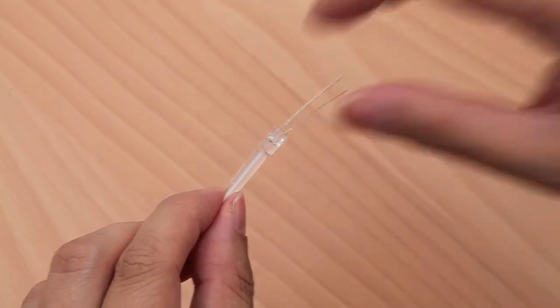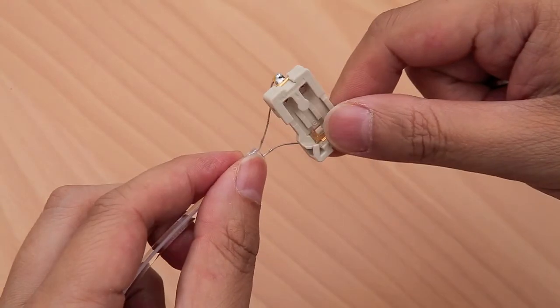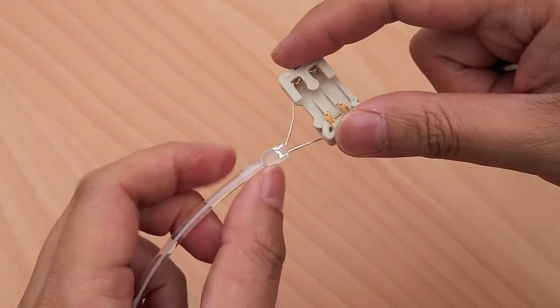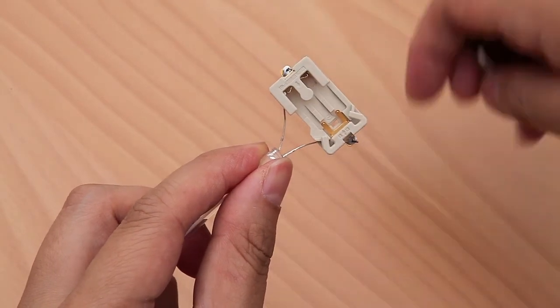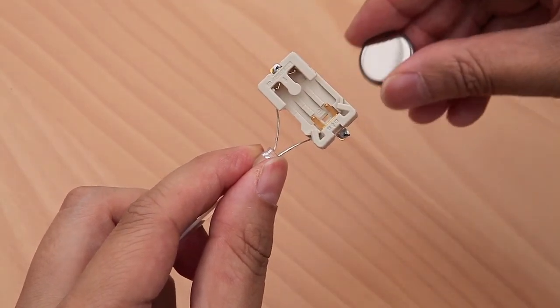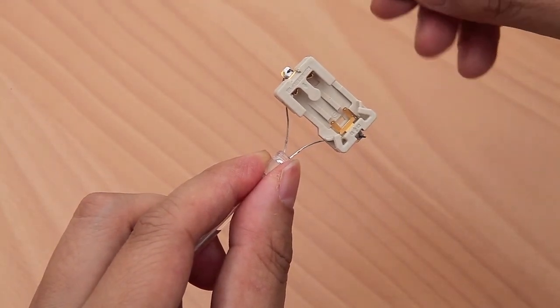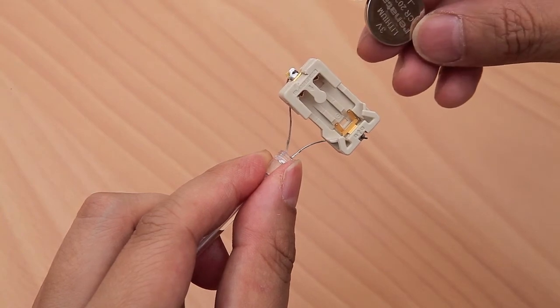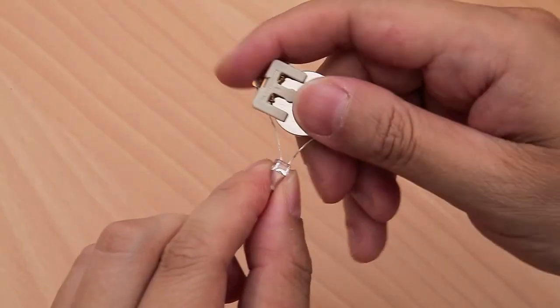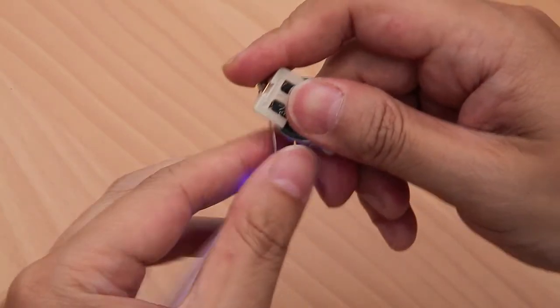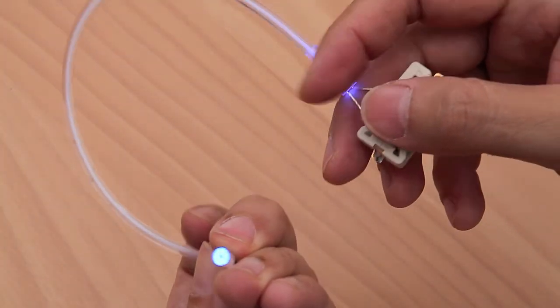I'll quickly connect this to a simple coin cell holder and this is the blue LED. The voltage requires about three volts. I've got a coin cell here so you can connect this right to the LED without a resistor. So it goes there.